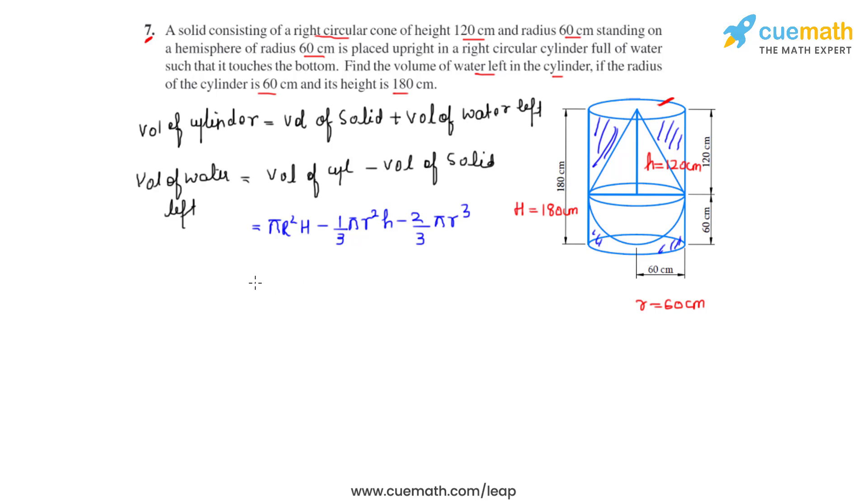We can take 1/3πr² common because the radius for all three of them is same as we had discussed initially. So actually here in place of r² we can write it as small r². So we are left with 3H minus h minus 2r inside the brackets.